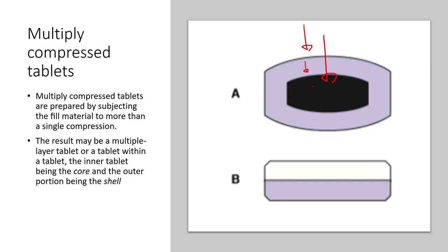Another method is when you fill and compress the first tablet and simply add the second fill on top of your first compression. After the second compression, you will end up with a bilayered tablet. An example of this is your Alaxan FR which is yellow and orange, and you also have your Neoset which is white and green. Those tablets are impossible to be formed without compressing twice.